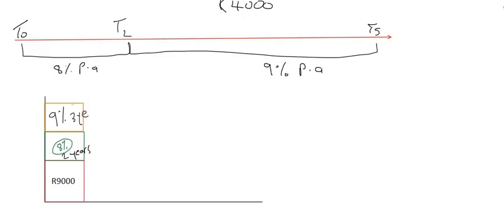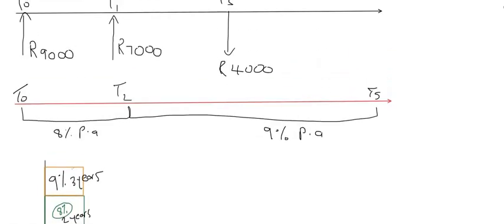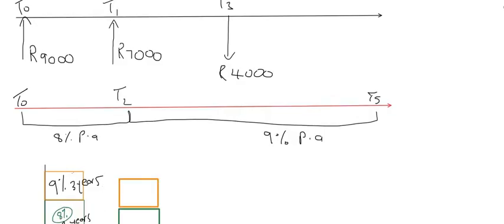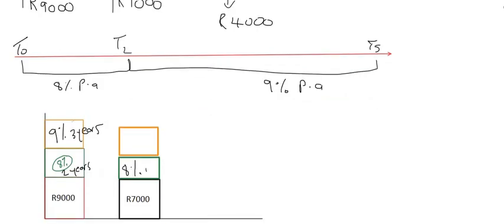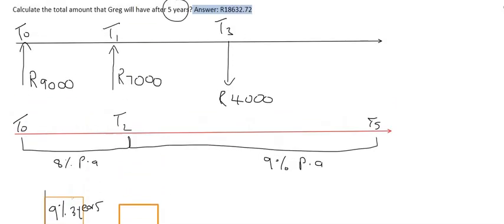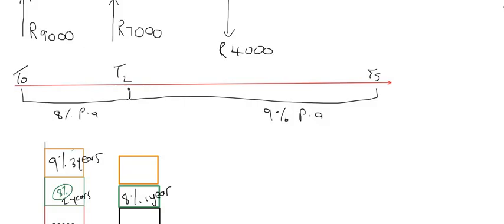Now going up to our initial timeline with the 7,000 rand: the bank has told us that for the first two years the account is open the interest rate will be eight percent. Greg puts the 7,000 rand in one year after the account is open, so for how long will that 7,000 rand grow using eight percent? Only for one year, because the bank's only giving two years at eight percent. So it will have one year at eight percent, then the bank changes to nine percent — and that 7,000 rand is already in the bank, so it will get the full three years at nine percent.